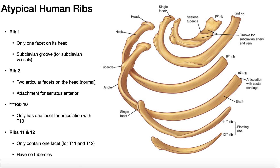The other thing that rib 1 has is grooves for the subclavian artery and the vein. These structures cross underneath the clavicle over the first rib through these grooves, becoming the axillary artery and axillary vein. Between these two grooves we have a bulge in the bone called the scalene tubercle — important because it's the insertion of the anterior and middle scalenes. The posterior scalene will insert on the second rib.